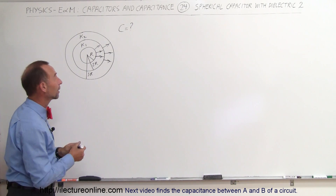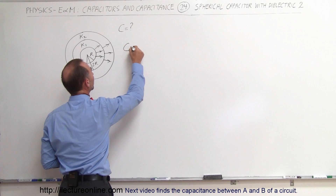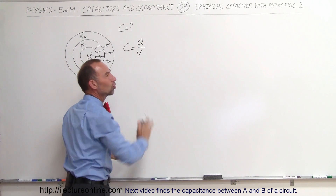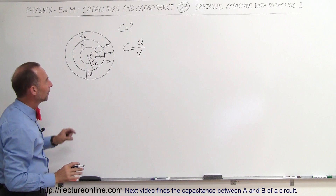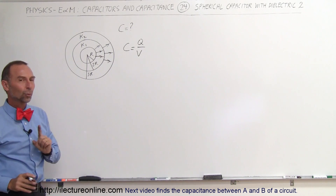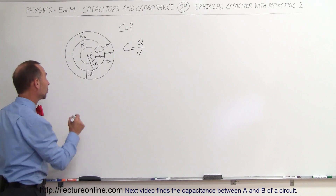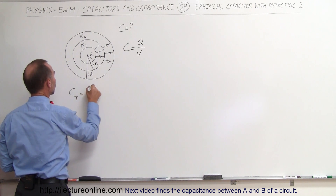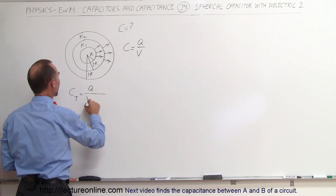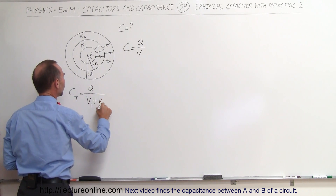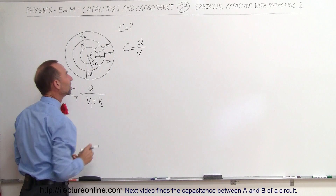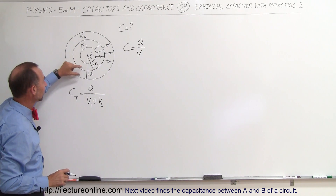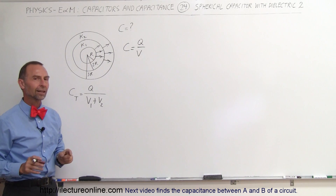Normally, the capacitance of a capacitor is equal to the charge divided by the potential that pushes the charge onto the capacitor. But in the case of multiple layers like that, we want to write the equation so that the total capacitance is equal to the charge on the capacitor divided by the sum of the potentials across each of the layers. V1 is the potential across the first layer, V2 is the potential across the second layer.